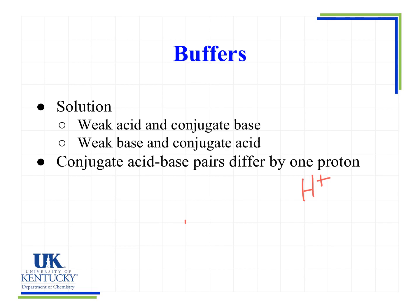Let's look at some examples so we can learn how to identify if we have a buffer present. Let's start with something fairly simple — HF. When we make its conjugate, we see it's F minus because it differs by a single proton. HF is a weak acid, F minus is its conjugate base, so therefore this could make a weak acid/conjugate base pair, and therefore this could be a buffer solution.